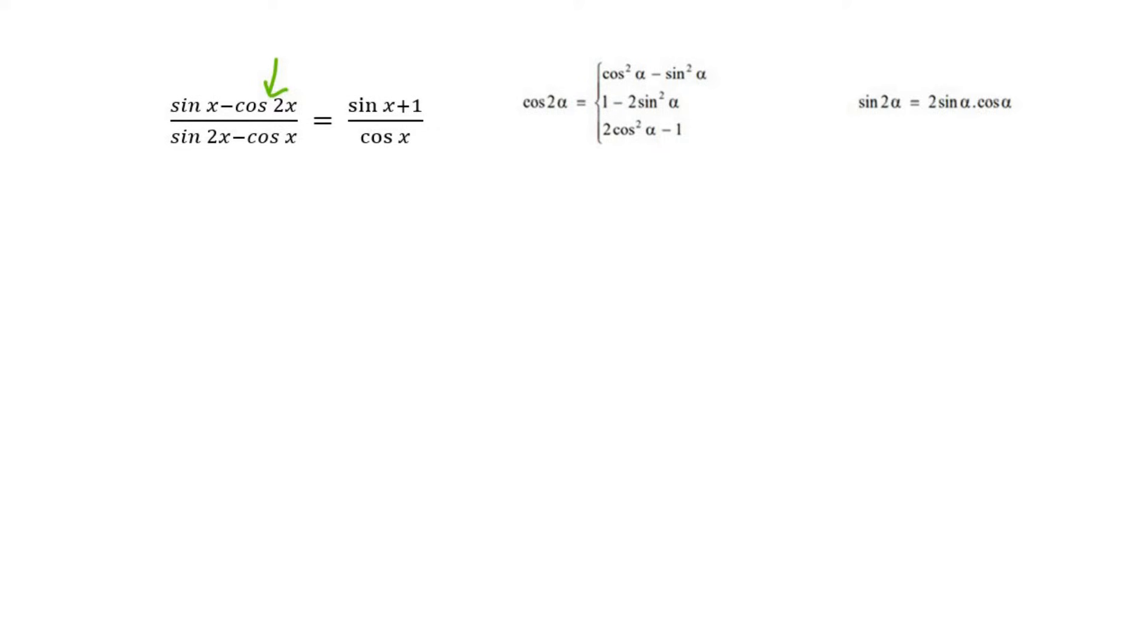When deciding which cos2x to choose from, because there's three options, you need to make a clever decision. And it's quite simple actually, most of the time. What you do is you look at the answer that you're trying to get to. Now why am I only looking at the top? Well that's because this cos2x is at the top.